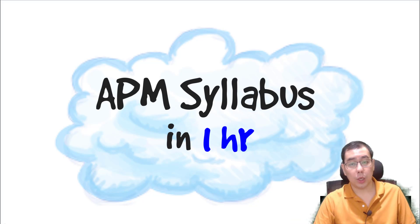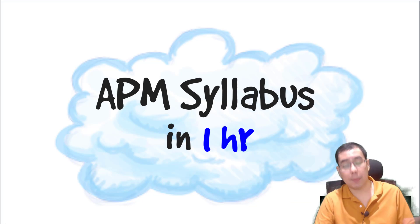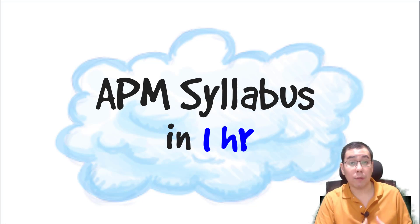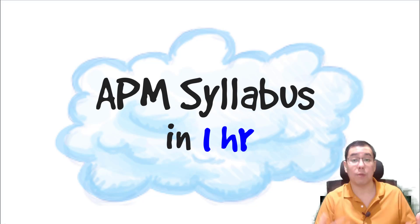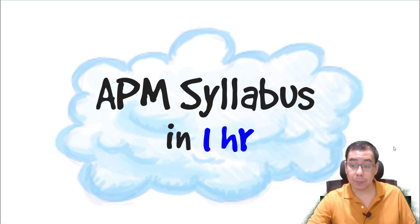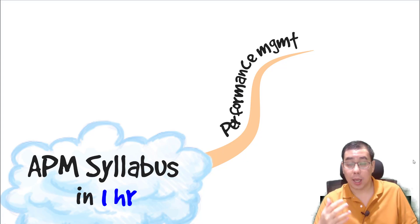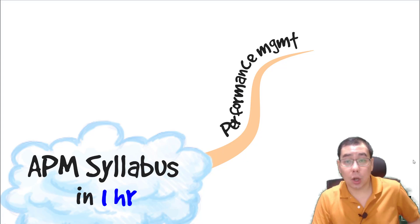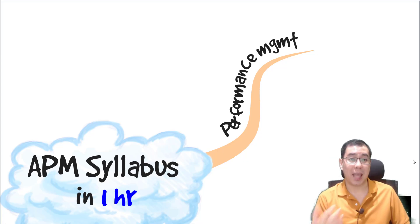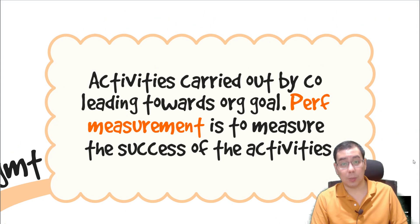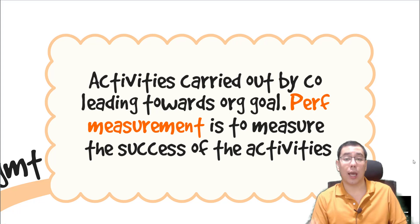Today I'm going to go through this video which summarizes the APM syllabus. I hope this will give you a very quick revision, a quick recap right before your exam for APM. The very first thing when we talk about APM is that it's all about performance management. Performance management basically refers to activities carried out by the company leading towards the organization's goal.